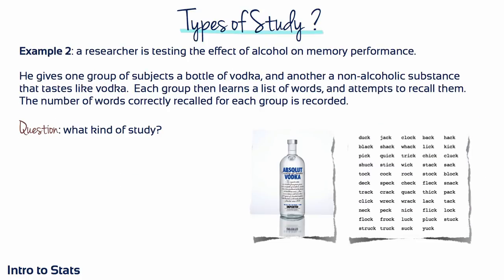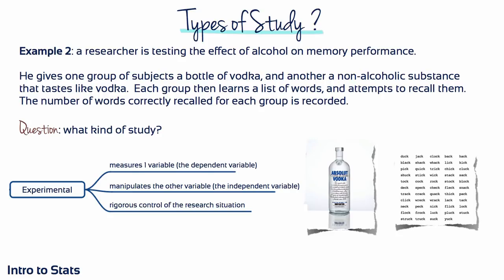Example 2: A researcher is testing the effect of alcohol on memory performance. He gives one group of subjects a bottle of vodka and another group a non-alcoholic substance that tastes like vodka. Each group then learns a list of words and attempts to recall them, and the number of words correctly recalled is recorded. The researcher manipulates the beverage — assigning vodka or non-alcoholic fake vodka — and then measures the number of words recalled. This is an experimental study.